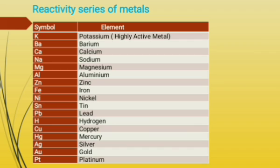Reactivity of metals: The tendency of an element to react with other substances to form compounds is an indicator of its reactivity. The more the tendency of an element to form compounds, the more is its reactivity. All metals do not have the same reactivity; some are more reactive than others. Such metals occur in the form of their compounds in the earth's crust, while lesser reactive metals occur in their native elemental state. The series of metals arranged in the order of their decreasing reactivity is called the metal reactivity series.